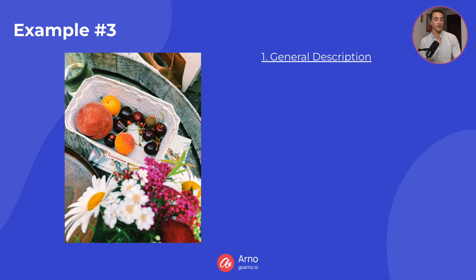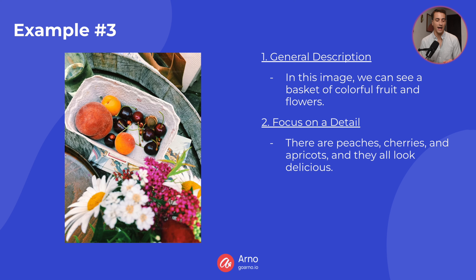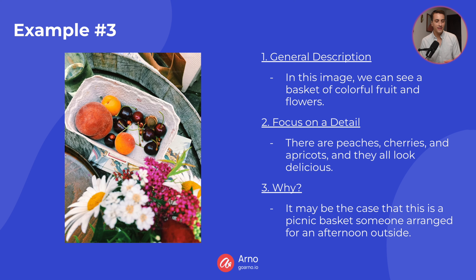Example number three — general description: in this image, we can see a basket of colorful fruit and flowers. Sentence number two, let's zoom in on a detail: I noticed the fruit in the basket — there are peaches, cherries, and apricots, and they all look delicious. And finally, why? It may be the case that this is a picnic basket someone arranged for an afternoon outside.